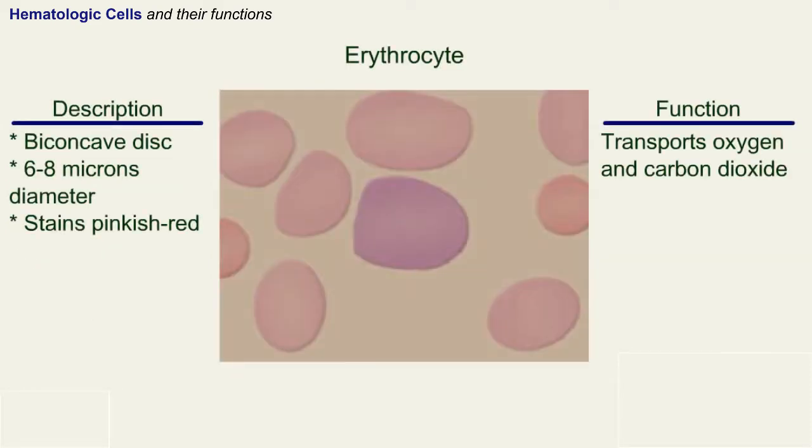Erythrocyte: a red blood cell with a biconcave disc 6 to 8 microns in diameter that stains pinkish red. An erythrocyte transports oxygen and carbon dioxide.